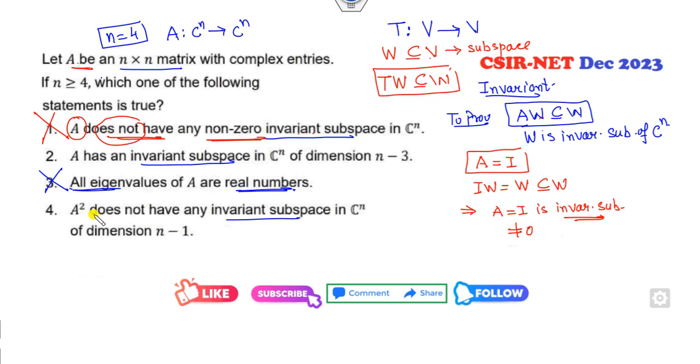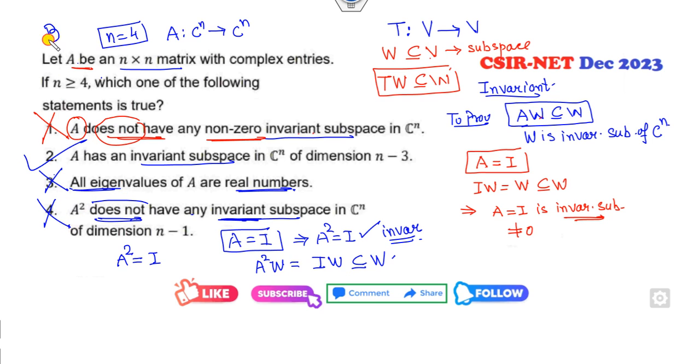Now out of the second and fourth, A squared. Again, he said does not. So what is my A squared? A squared is again I. If I take A = I, then A squared is again I. Then again I can say IW is the subset of this. IW means that is A²W. So what does it mean? This is my invariant subspace. But he said does not. So this option is also cancelled. The rest of the option B is my correct answer. It is one of the easiest questions in this complex analysis.